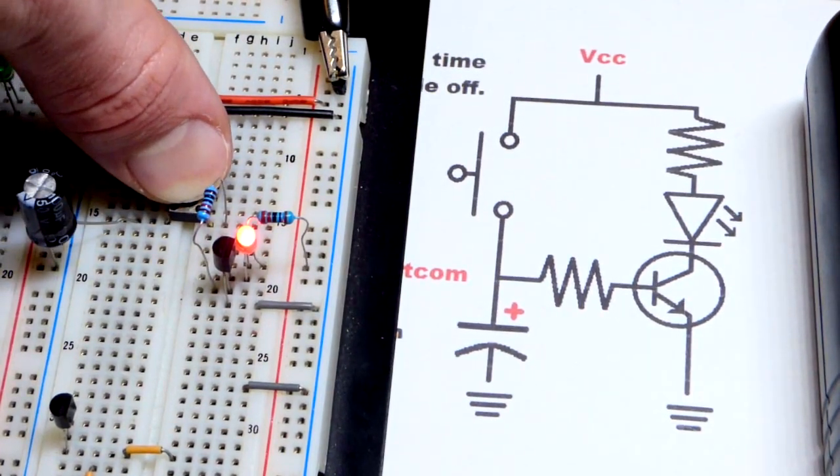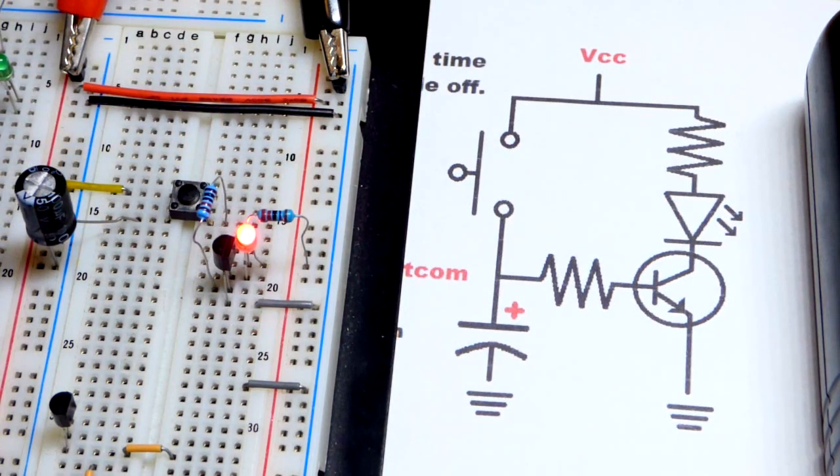But in any case, there we go. We hit the button. The LED turned on instantly. Now, I release the button. The LED stayed on. And then now it is fading off.